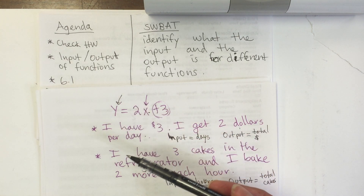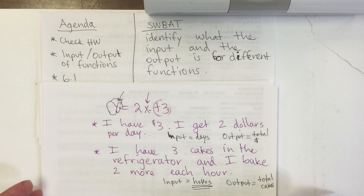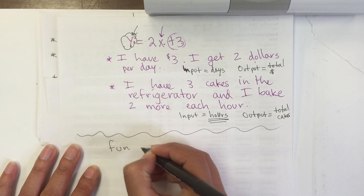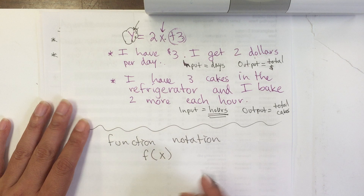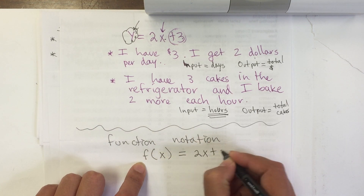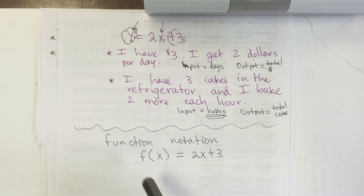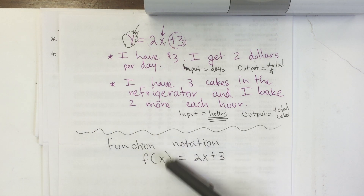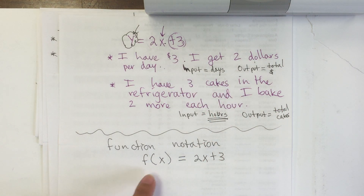This is similar to what we're going to be looking at, except there is going to be a small change: y is not going to be y anymore. Instead, function notation uses f(x). This stands for the y, so f(x) = 2x + 3. It stands for exactly the same thing, but we're going to be using it to figure out tables and other things. That's why we're using function notation.